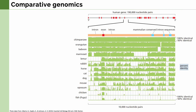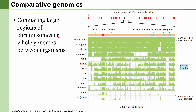Another analysis we can do is comparative genomics, where we compare large regions of chromosomes or even whole genomes between different organisms. This is becoming much more common now because whole genome sequencing is becoming more affordable. By doing this, we can reveal conserved regions among different organisms. In this example, we can see a variety of organisms from primates to mammals and birds like chicken and fish, and we can see regions highly conserved even among these different organisms, like a specific exon, and some regions only conserved in specific groups, like mammalian conserved intron sequences.